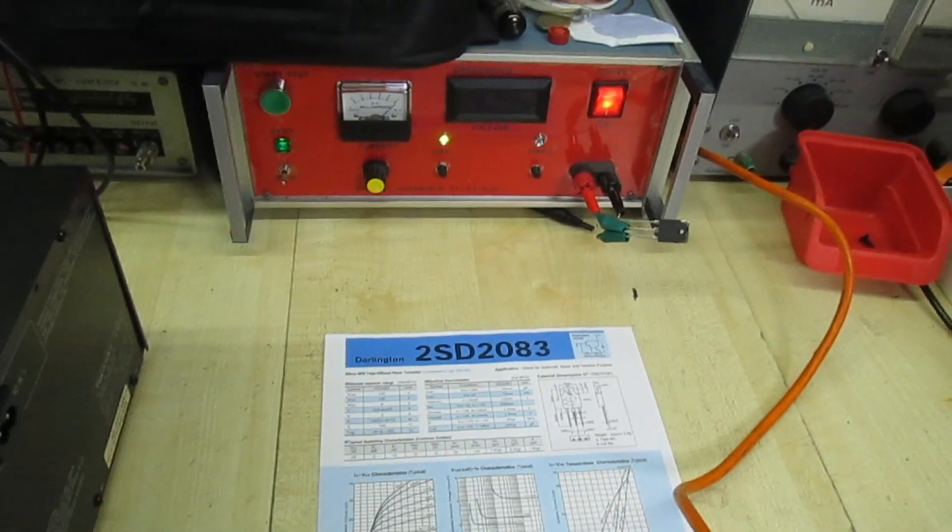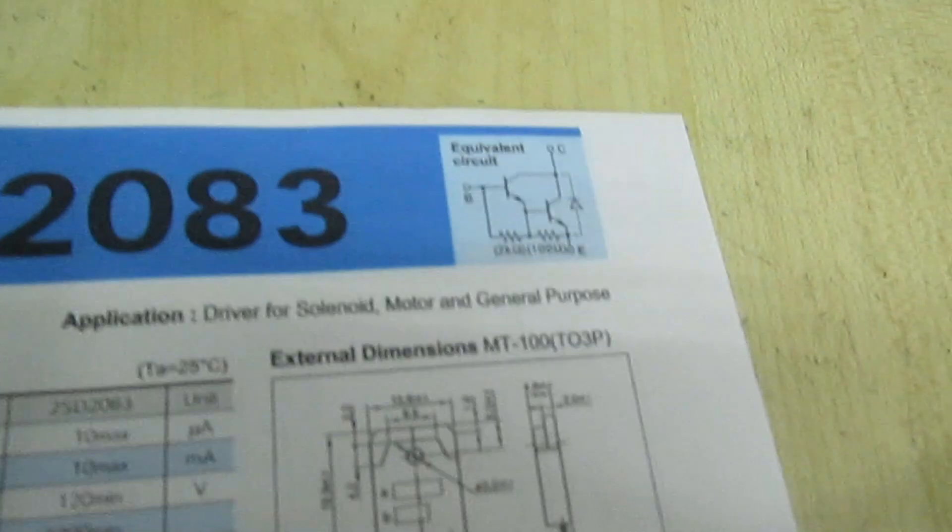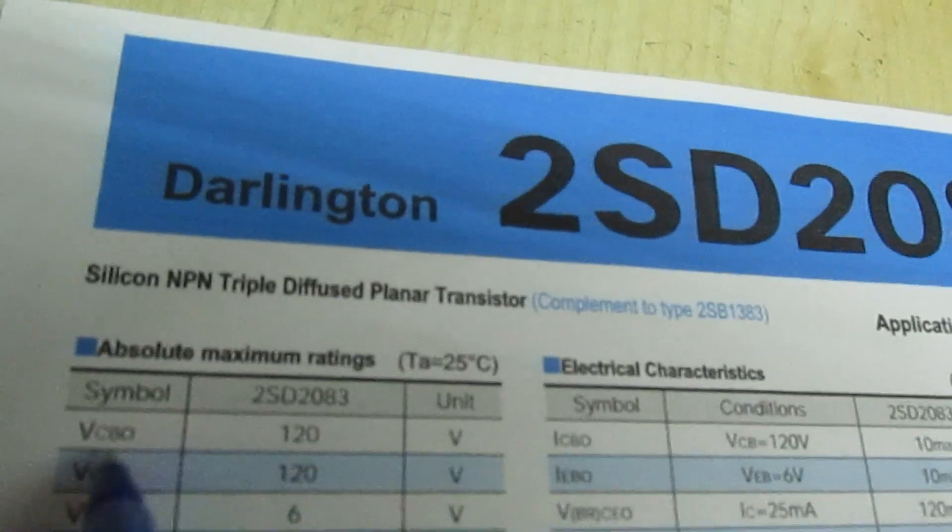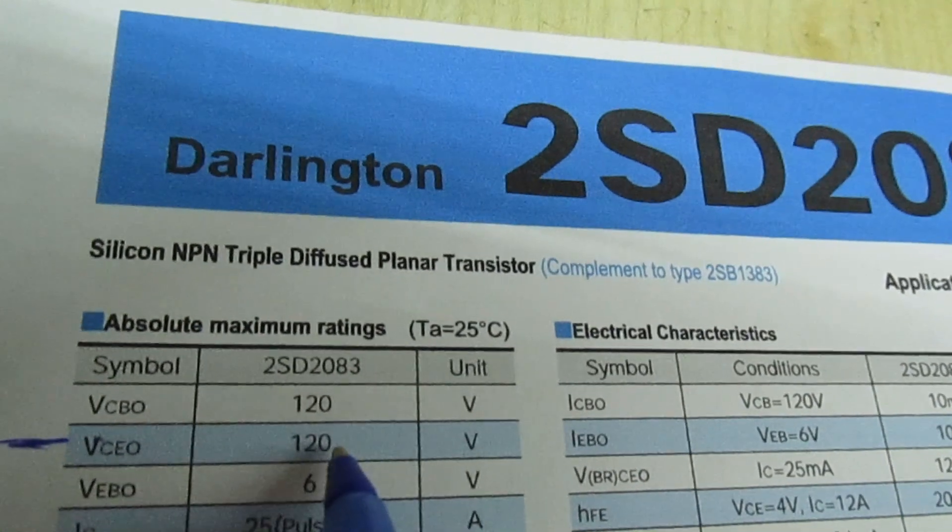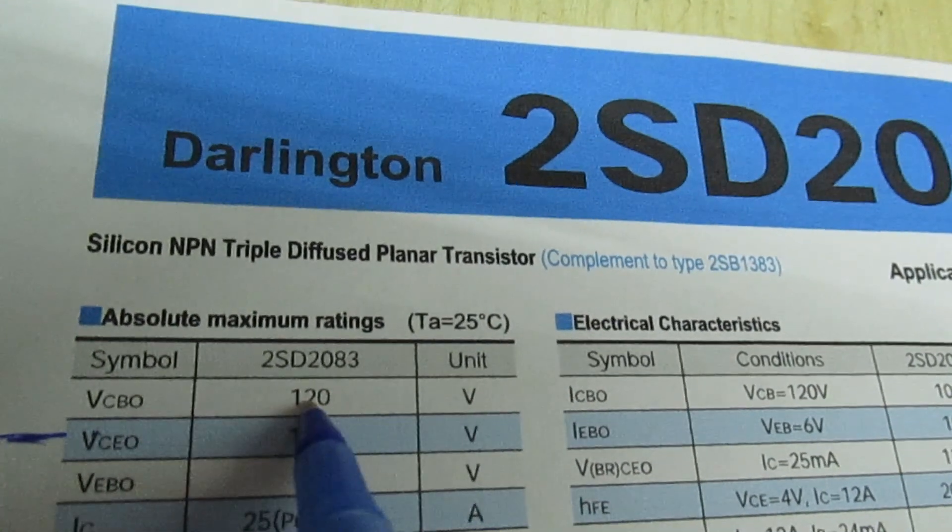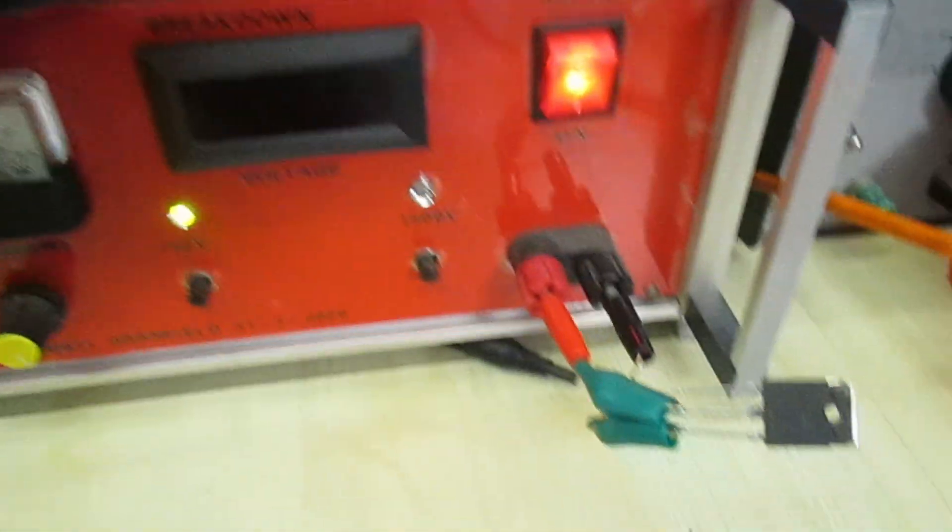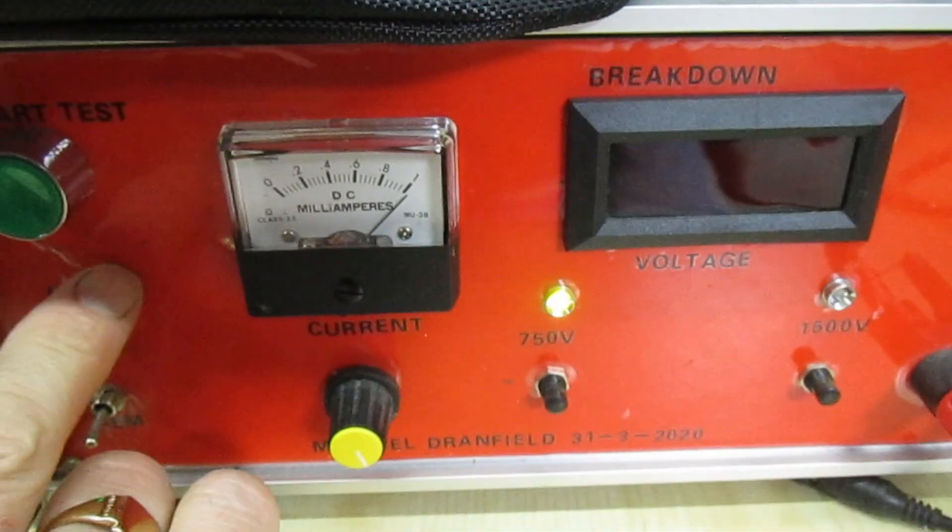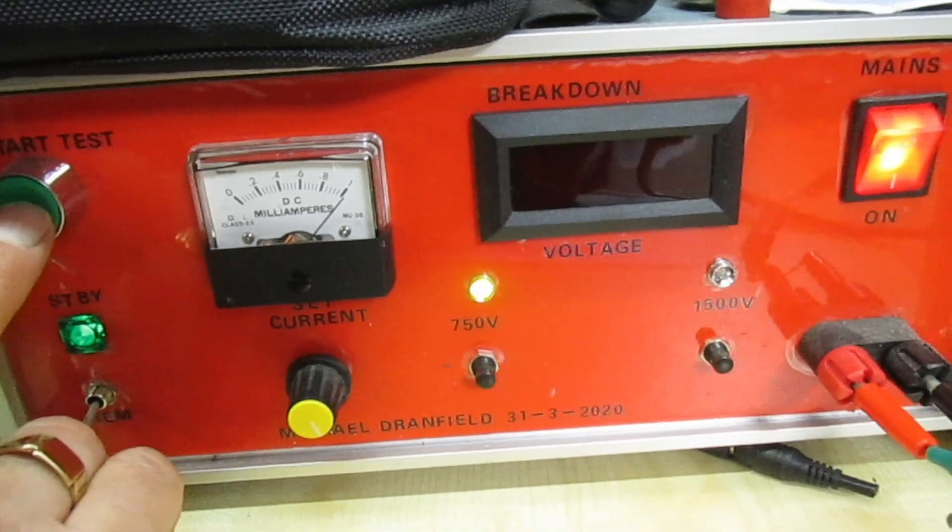Let's run some more tests on it. We'll just run another test on this transistor. We know we've not got a Darlington like we should have. If we look at the data sheet here, it says the maximum collector-emitter voltage is quoted at 120 volts. Let's put this onto a tester and see what we've actually got.